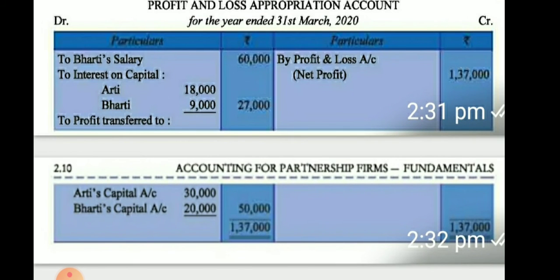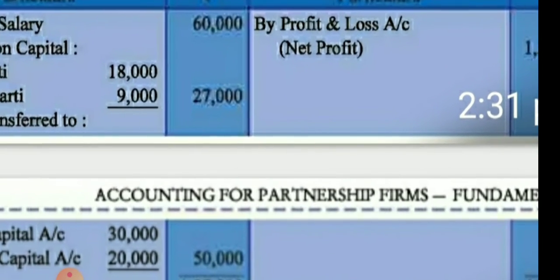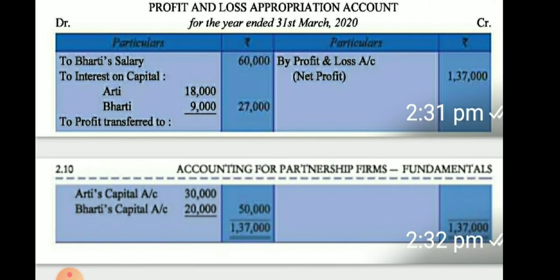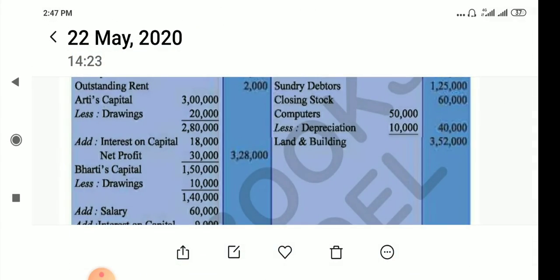To recap the P&L Appropriation account: first we take the profit from P&L account — ₹1,37,000 — transferred in. On the debit side: Bharti salary ₹5,000 per month = ₹60,000; interest on capital ₹18,000 and ₹9,000 = ₹27,000 total. The remaining profit is transferred to capital accounts of Aarti and Bharti in the ratio of 3:2.